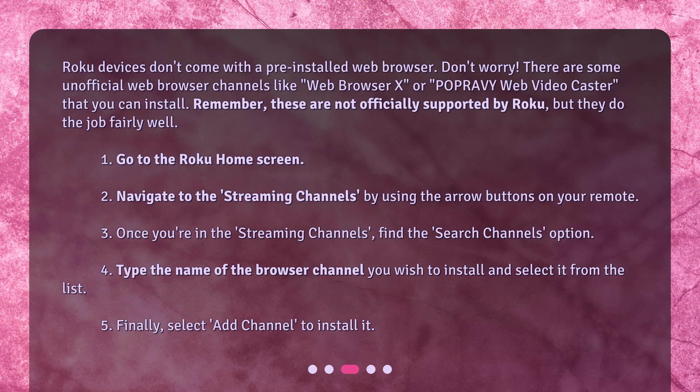1. Go to the Roku home screen. 2. Navigate to the streaming channels by using the arrow buttons on your remote. 3. Once you're in the streaming channels, find the search channels option. 4. Type the name of the browser channel you wish to install and select it from the list. 5. Finally, select add channel to install it.